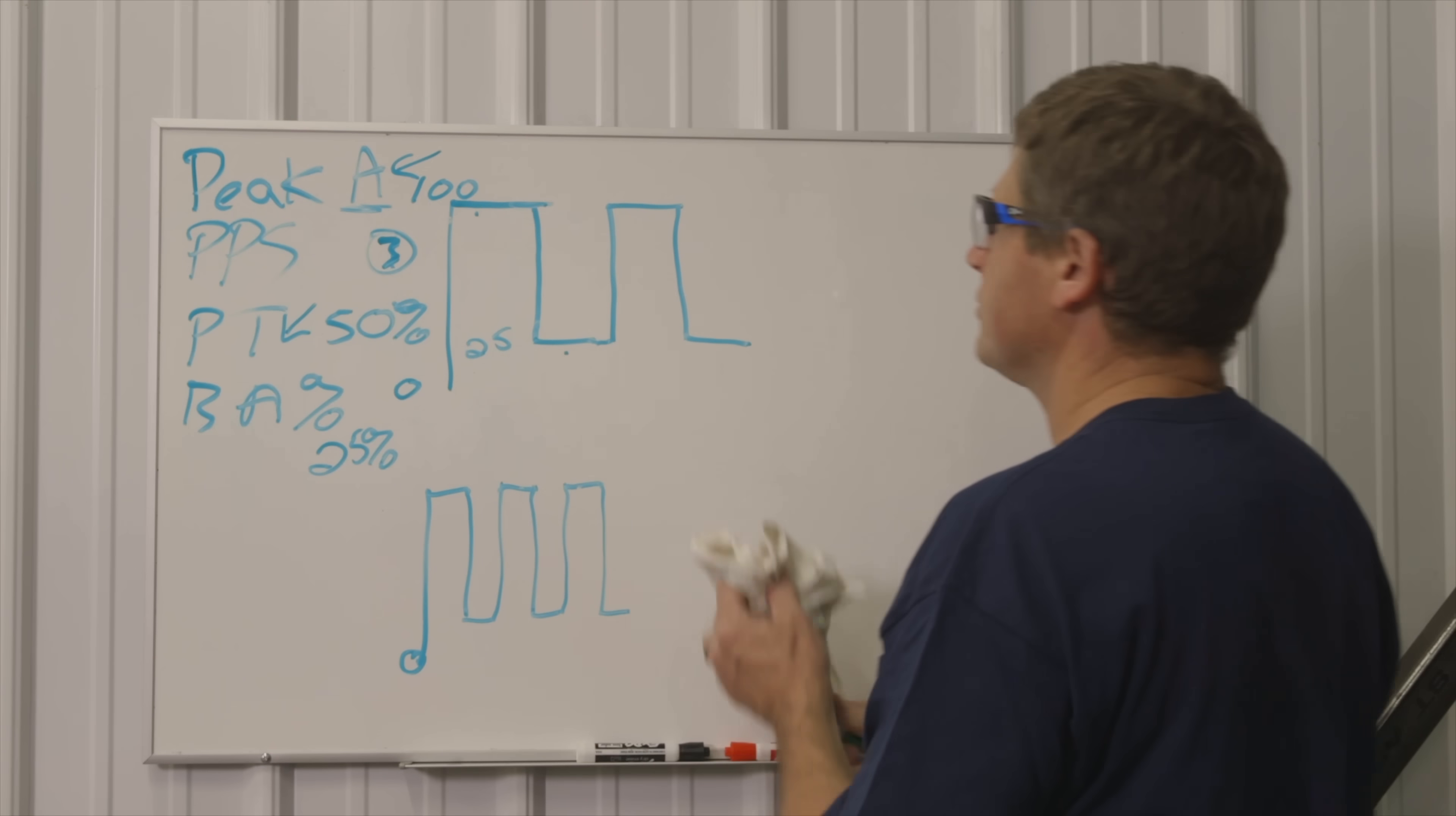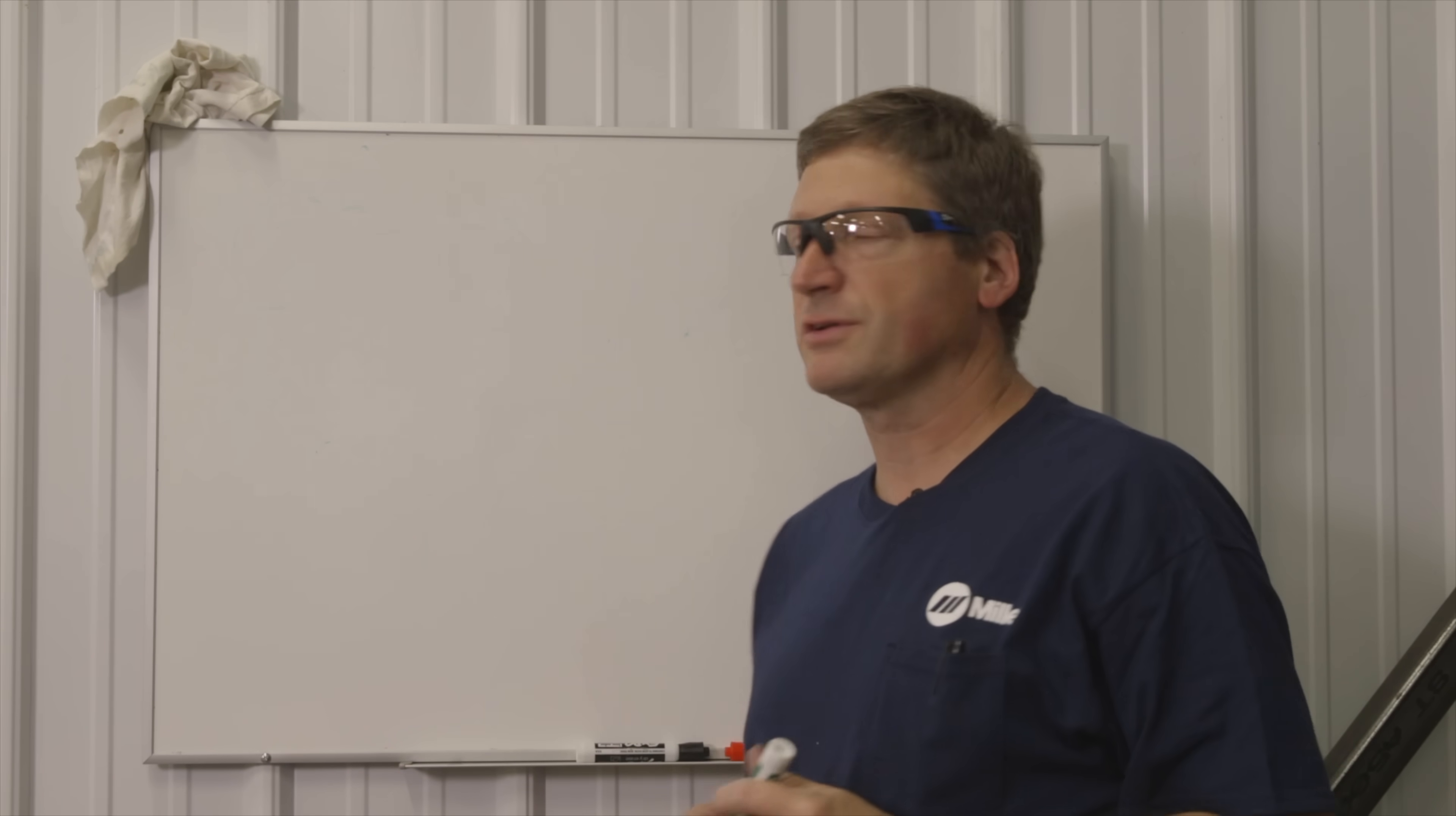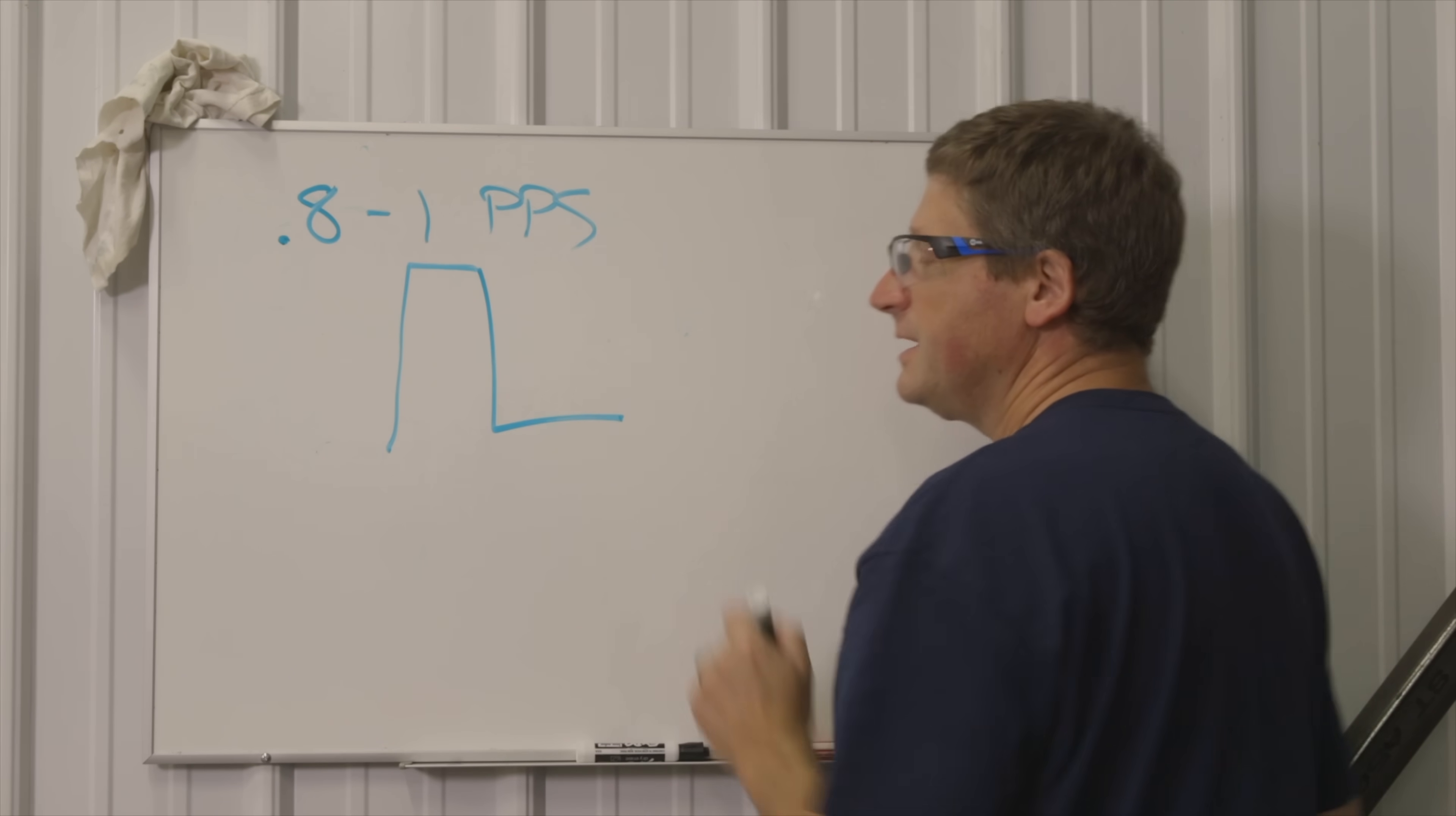Another way to use your pulser is if you're trying to learn how to TIG weld and you want to learn that filler metal deposition where you're adding the filler metal to the puddle. Sometimes the pulser is a neat way to help you learn that rhythm and what I do is I set my pulser anywhere from 0.8 to maybe one pulse per second. That starts to give me that rhythm where every time that machine pulses to its high level I'm dabbing the filler metal.